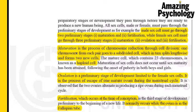The second stage is ovulation. Ovulation is the time during which the mature egg escapes during the menstrual cycle. A mature egg is released from the ovaries during the process of ovulation, and it only happens within females.